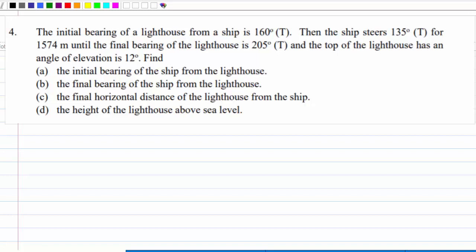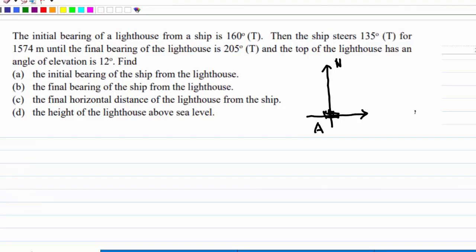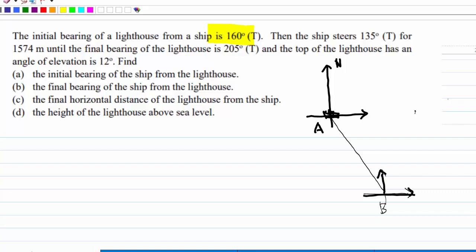First, we construct a triangle of the situation. Suppose the ship is at location A as shown on the diagram, and the lighthouse from the ship has a bearing of 160 degrees. We draw 160 degrees to get the lighthouse — let's say the lighthouse is at location B. So this angle will be 160 degrees.